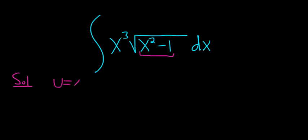So u is equal to x squared minus 1. So now if we compute du, we get du equals 2x dx.